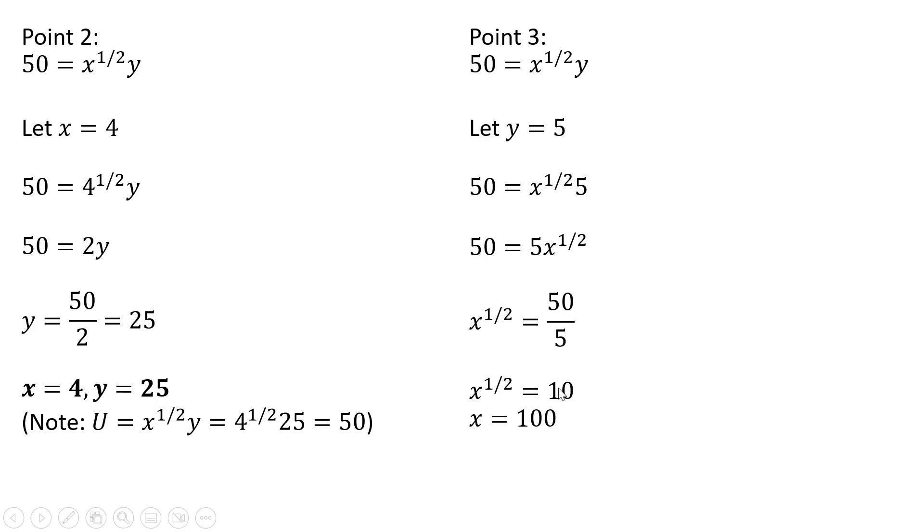And then we need to square both sides to get rid of this x to the 1 half power. Squaring 10, we get 100. And we found yet another point on Leo's indifference curve. Where x equals 100 and y equals 5, Leo will be getting 50 units of satisfaction.